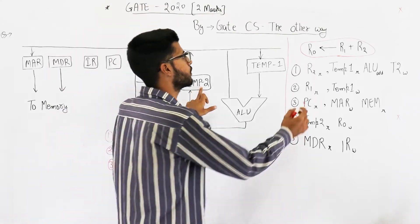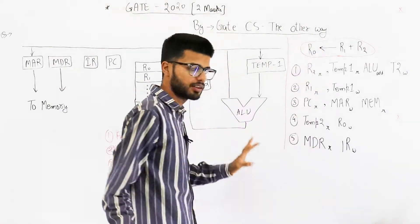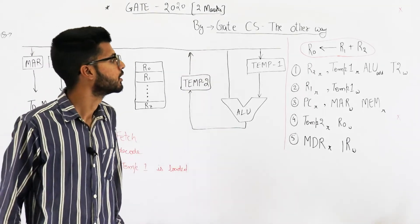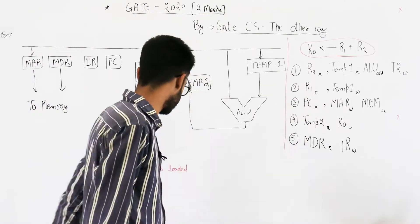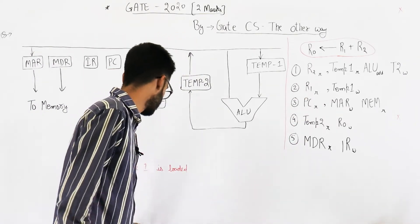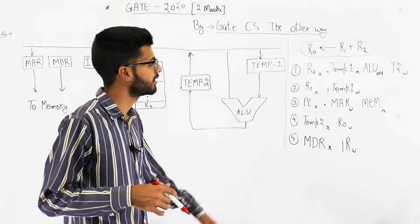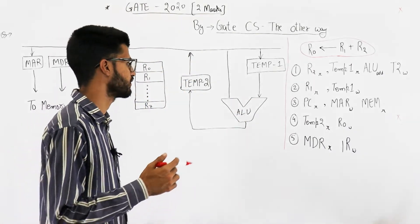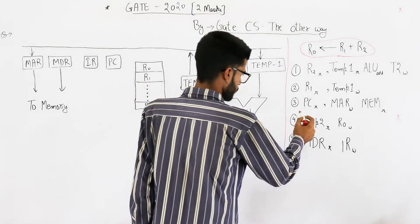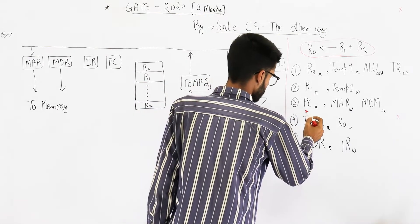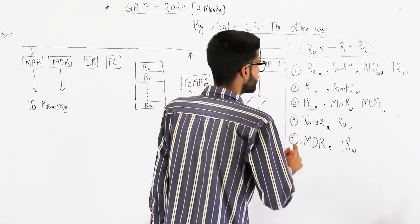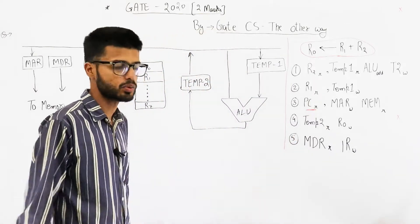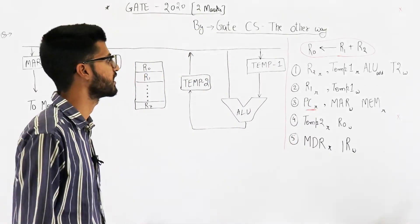The third step is performing the addition, which places the result into temp2. From temp2, we move the result into R0. Those are the steps we need to carry out. Now let's analyze the five given steps to identify where the fetch cycle is. We can notice that PC is only used in one of the five steps, so that step must be related to the fetch cycle.